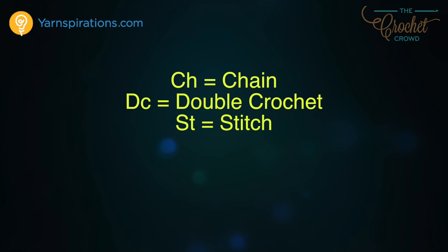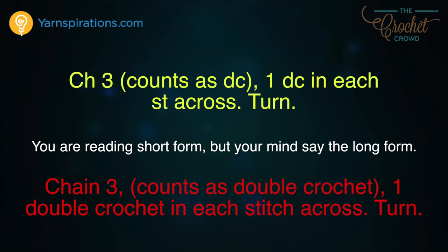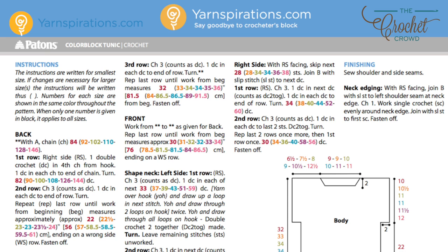In abbreviation substitution: CH means chain, DC means double crochet, and ST is short for stitch. While in this example it doesn't look like many extra words, when you look at a pattern from a distance it could be extremely long if all the full words were used instead of abbreviations. The more you use these abbreviations, the more your mind will substitute them for real words. You just have to practice and keep on trying until it starts to stick.